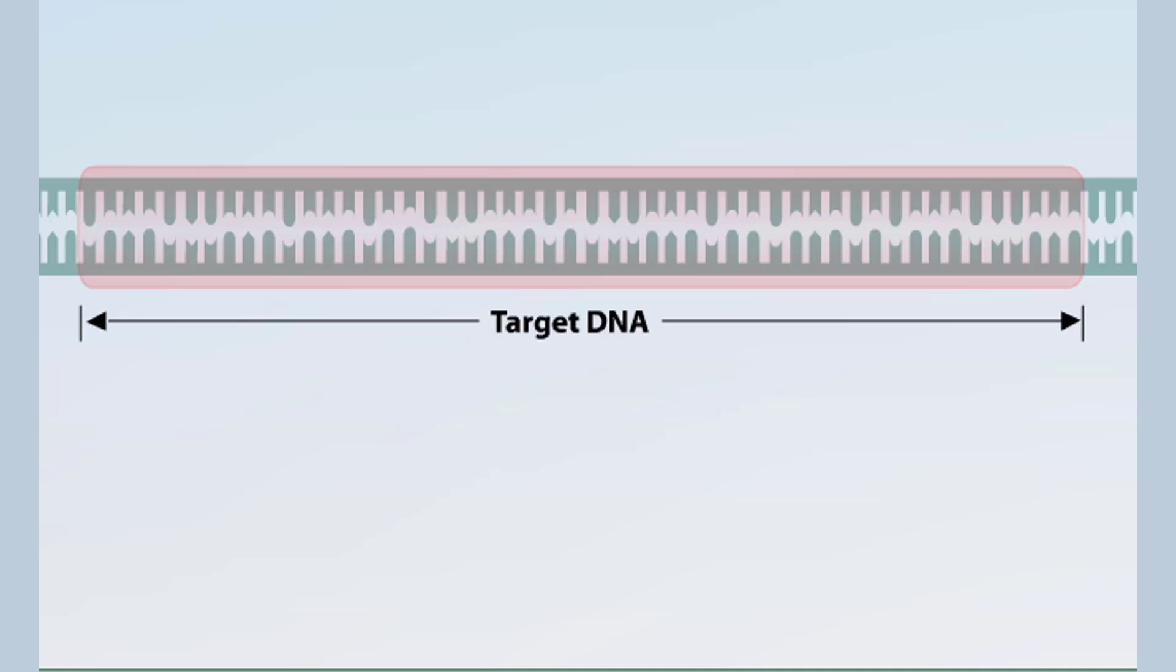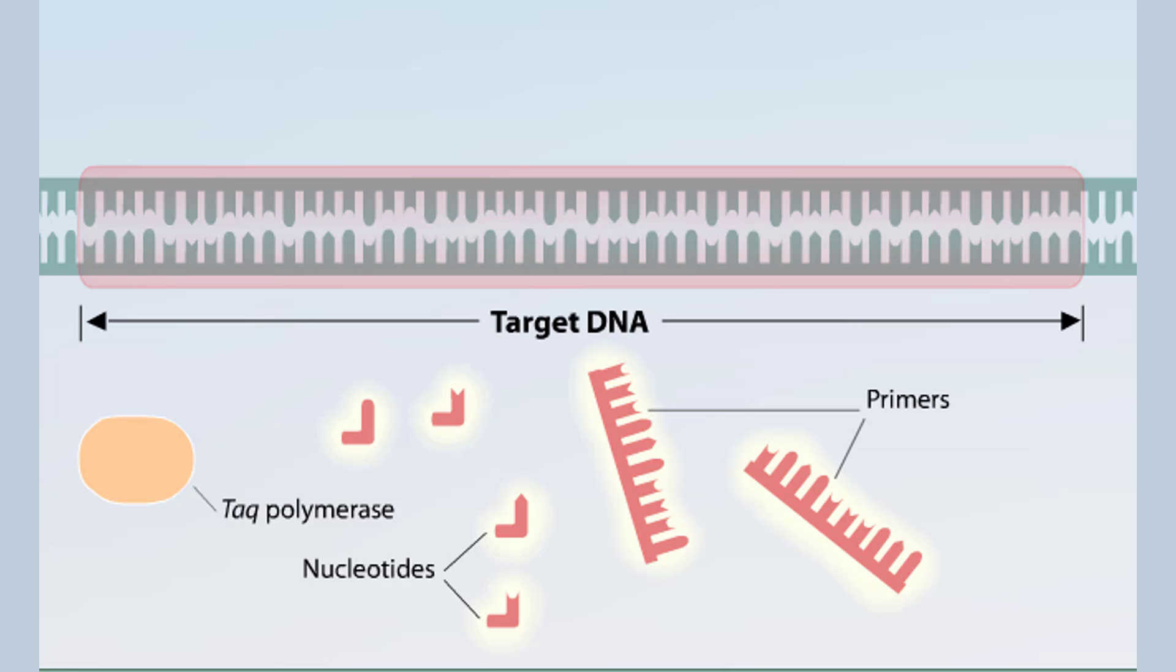In addition to the target DNA, a PCR reaction contains several other ingredients. These include free nucleotides, DNA primers, and the enzyme TAC polymerase. The primers are typically about 20 nucleotides long and are complementary in sequence to the ends of the target DNA. TAC polymerase is derived from hot springs bacteria and can tolerate the intense heat of a PCR reaction.